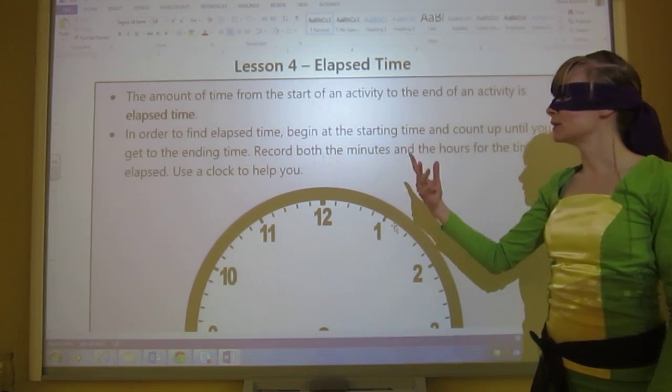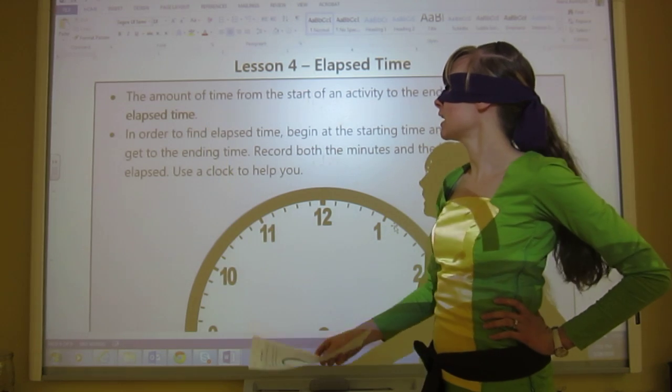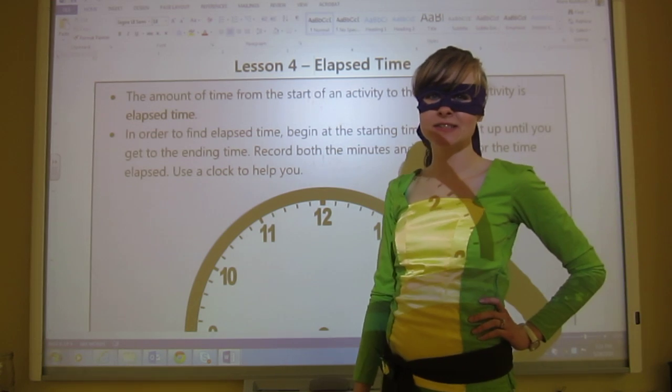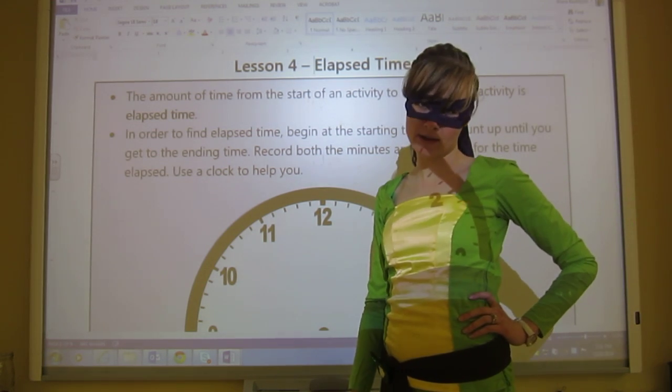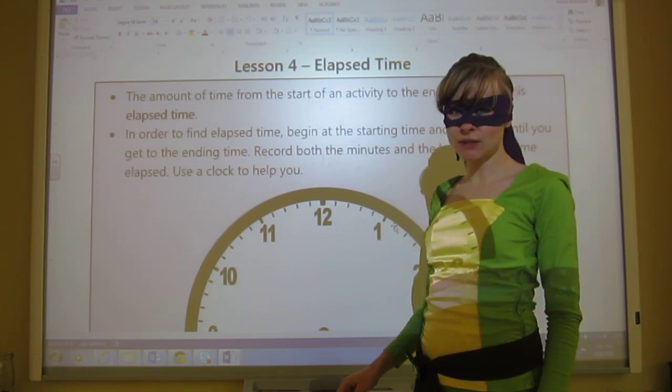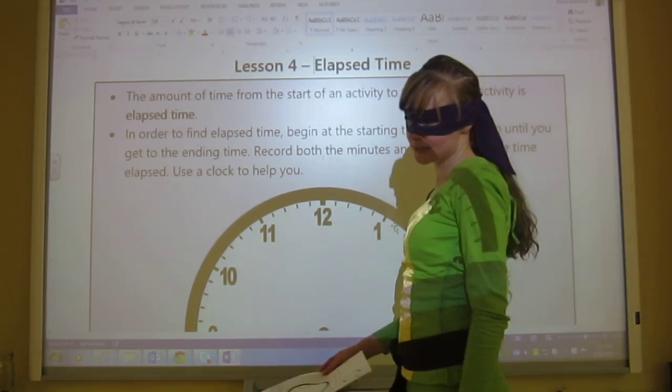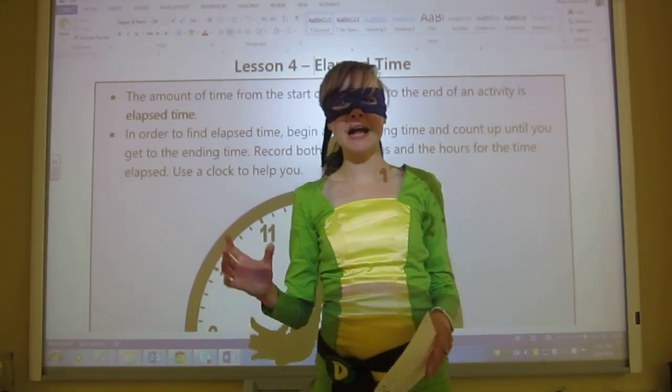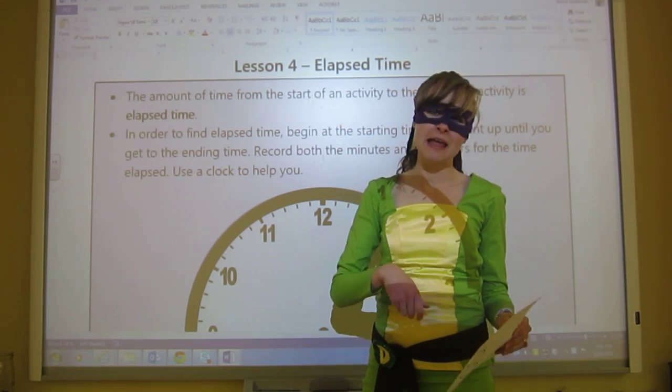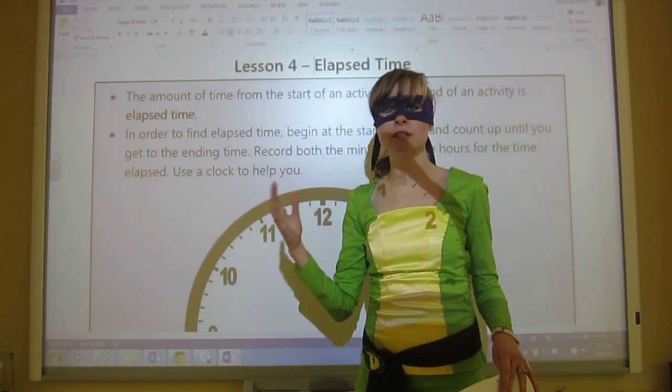Let's look at the sheet here. It says the amount of time from the start of an activity to the end of an activity is called elapsed time. I've been hinting at this for the last few lessons and now we're finally here. So in order to find the elapsed time, you want to start at the smaller time, the earlier time, and then you want to count up to the bigger time, to the later time.